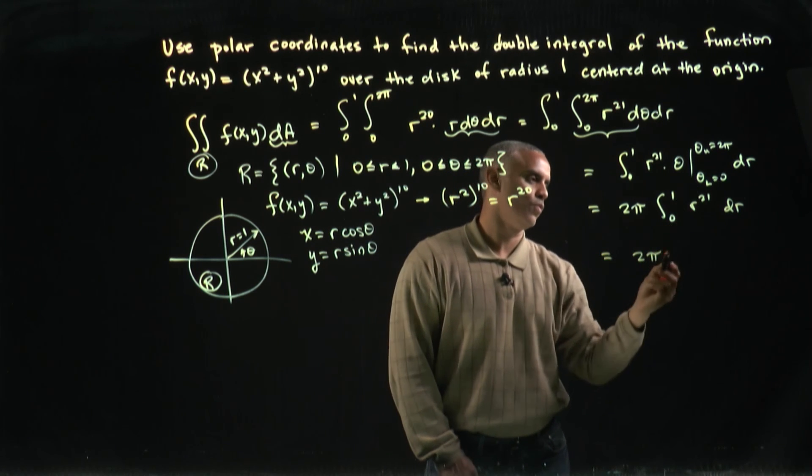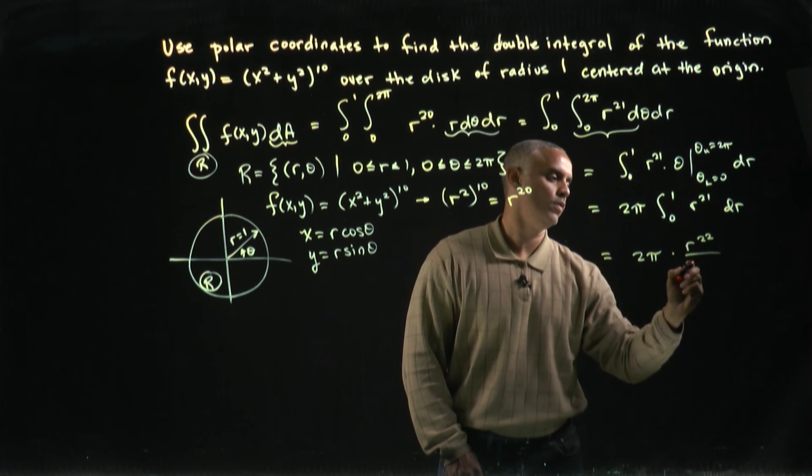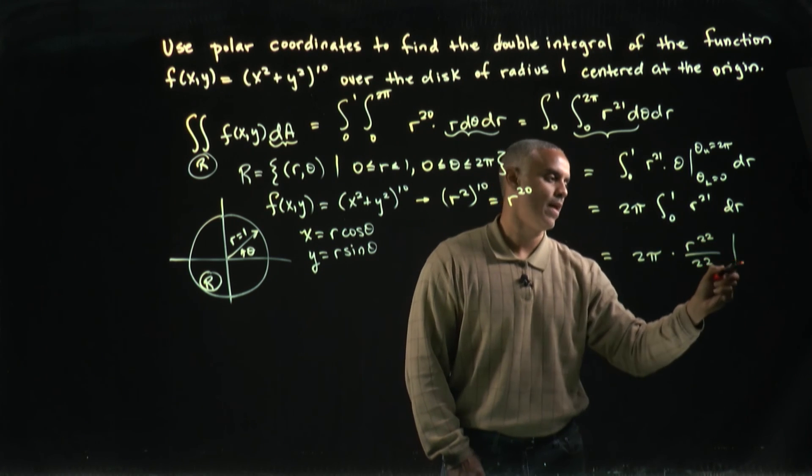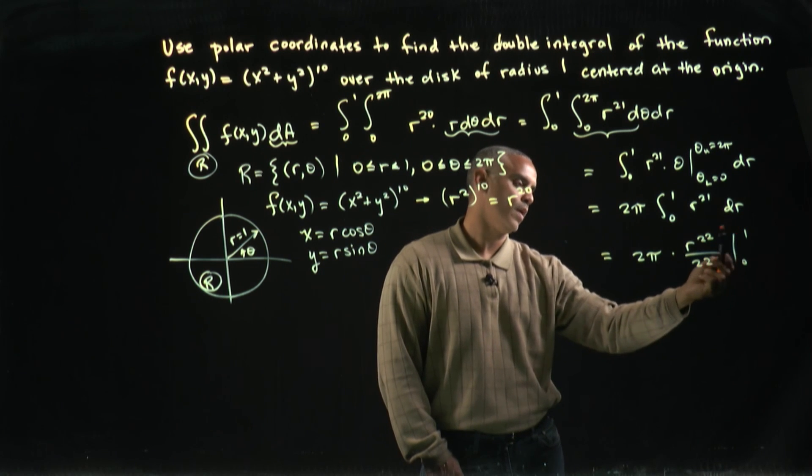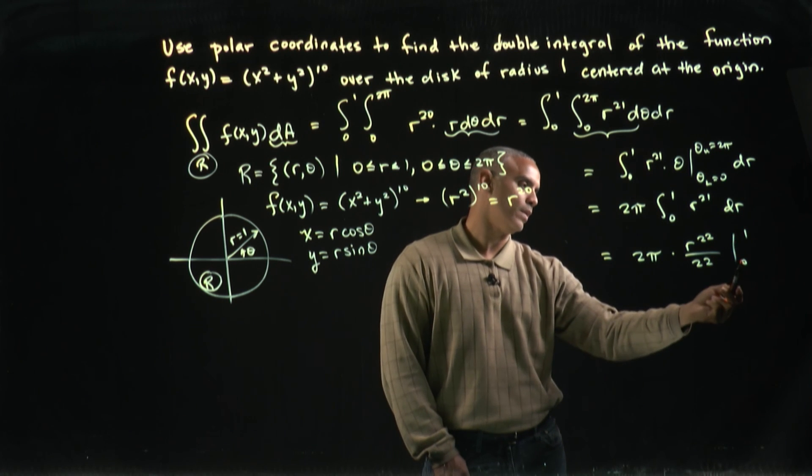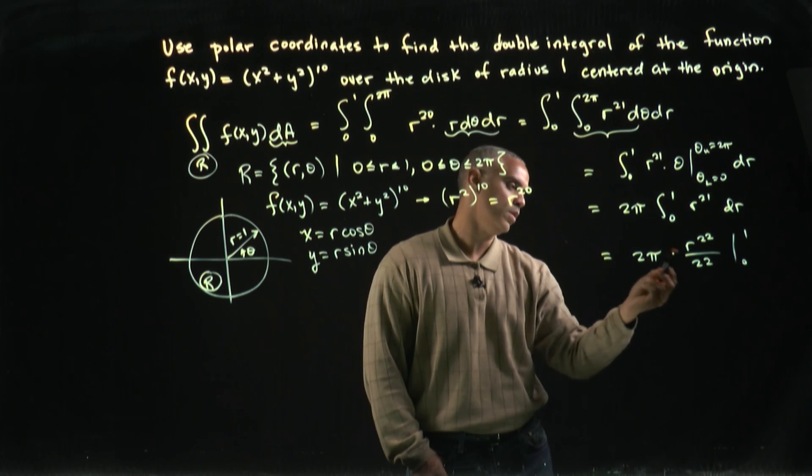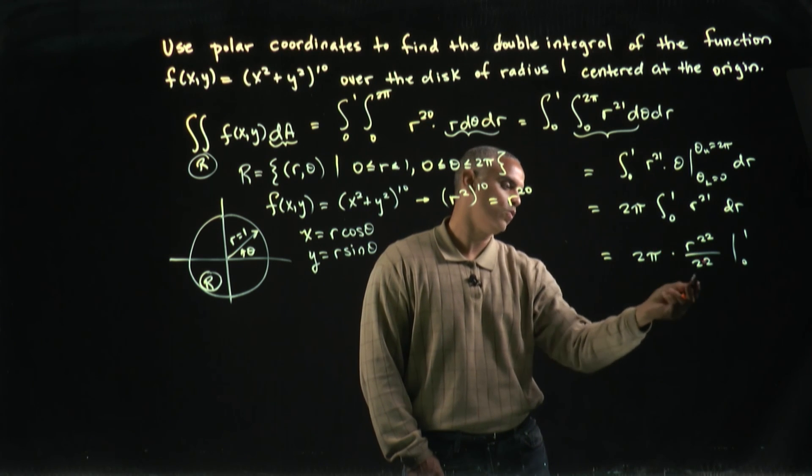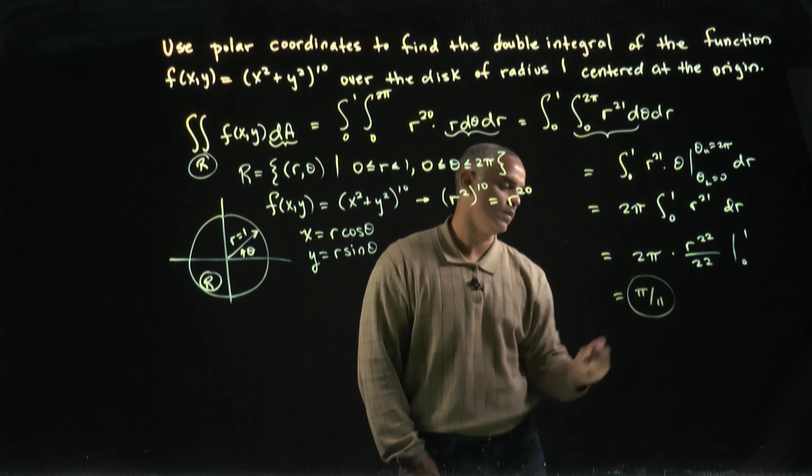This is a simple integral. I get r^22 / 22 evaluated from zero to one. Using the evaluation theorem, the r^22 term goes away at the lower limit and only survives at the upper limit. So I get 1^22, which is just one. Therefore, I get 2π/22, which is π/11.